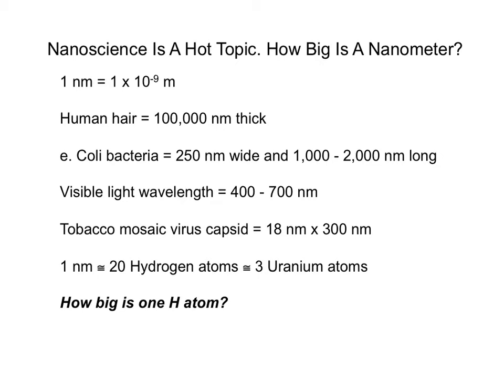Nanoscience and nanotechnology are hot topics right now, and a nanometer is very small. So based on this information, how big is one hydrogen atom? Stop the video and figure this out. So this is another conversion. One nanometer is the size of 20 hydrogen atoms, so one hydrogen atom is 0.05 nanometers.